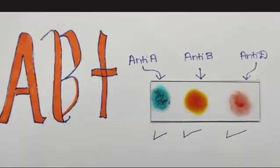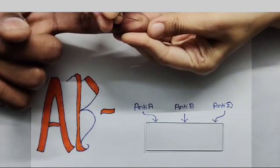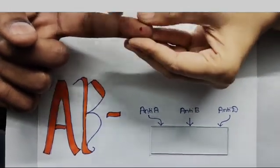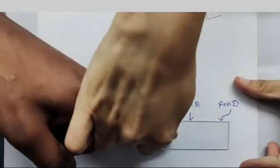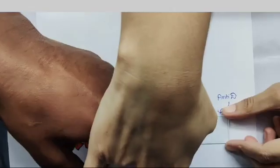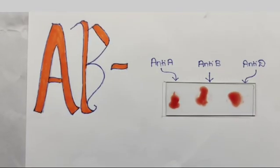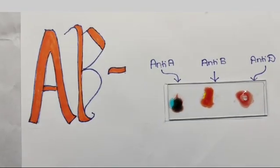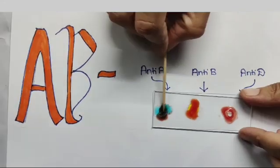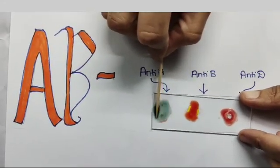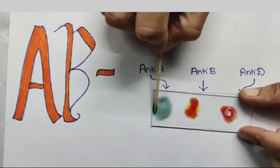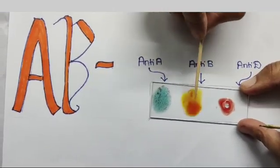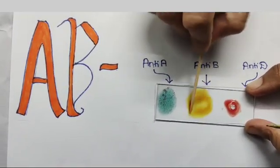Repeat the same for AB negative blood group. Here, clotting will be seen in both anti-A and anti-B, which means both antigen A and antigen B are present. It is AB blood group. No clotting is seen in anti-D, which means Rh antigen is absent.